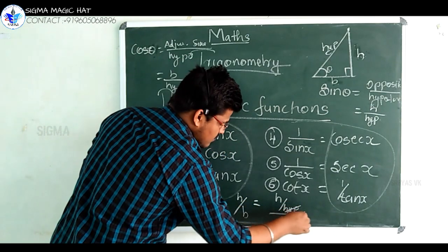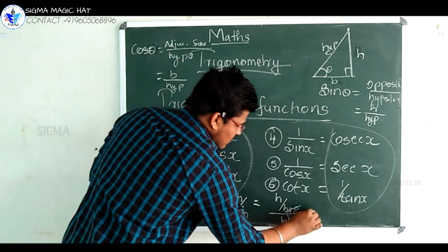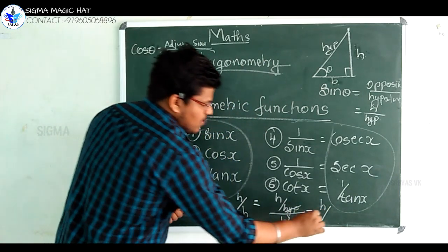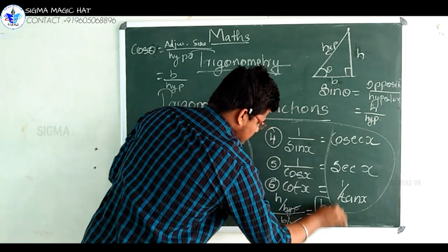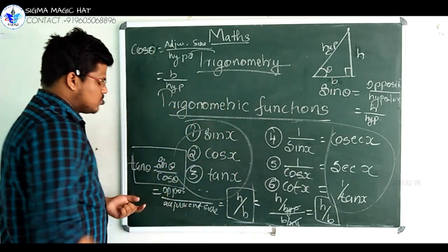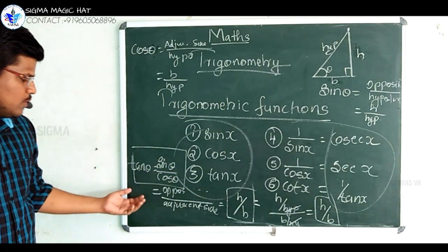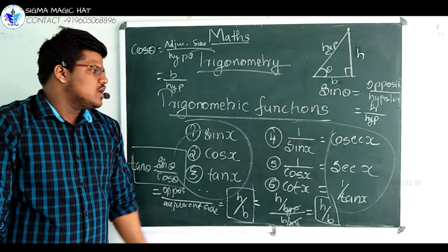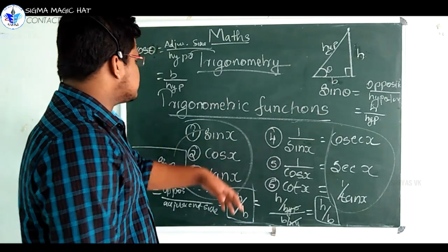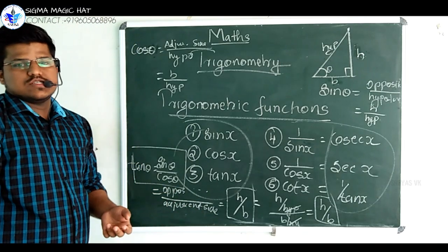So from this equation, we can cancel these two. Then we will get H by B. So tan theta can be found using these two methods. These are the basic terms or basic trigonometric functions in this chapter.